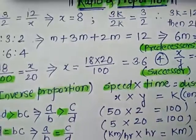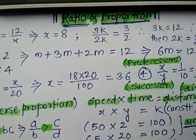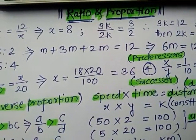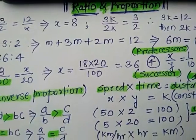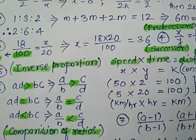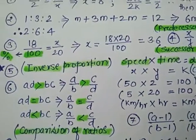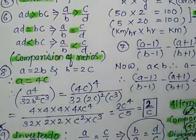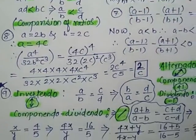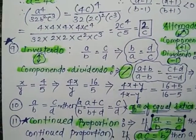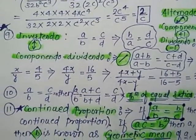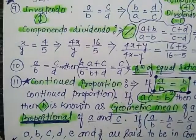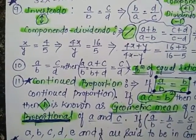Dear friends, we are going to see ratio and proportion. In this chapter we are going to cover ratio, operations on equal ratios, continued proportions, properties of ratios, theorem of equal ratios, and K method.